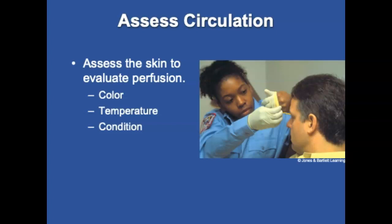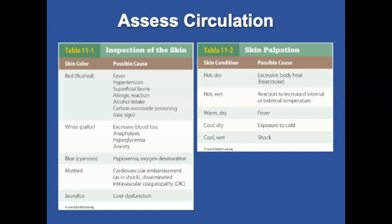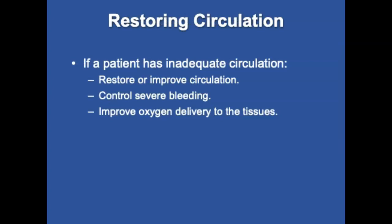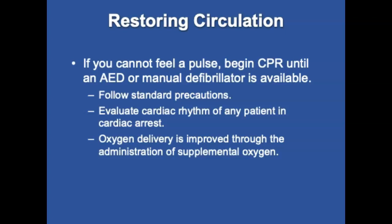Assess skin color — in people of color, mucus membranes can be assessed. Normal skin color in light-skinned individuals is pink and dry. Temperature rises as peripheral blood vessels dilate, such as with fever or high environmental temperatures, and falls as blood vessels constrict, as in shock. If a patient has inadequate circulation, you must restore it — control severe bleeding and improve oxygen delivery to tissues. If you cannot feel a pulse in an unresponsive adult, begin CPR until an AED and manual defibrillator are available. You must evaluate the cardiac rhythm of any patient in cardiac arrest with a manual cardiac monitor-defibrillator regardless of trauma or age. Oxygen delivery is improved through administration of oxygen.